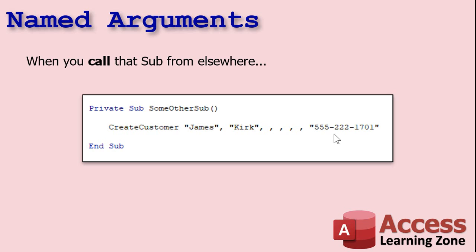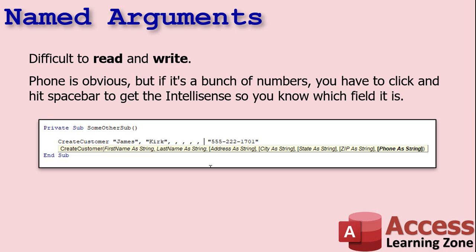When you call that sub from somewhere else, you say Create Customer and then your list of parameters. The way Bryce has it right now, if he only has first name, last name, and phone number, he's got to go comma, comma, comma, comma, comma. You've probably heard me joke about this in other videos — like DoCmd.OpenForm: form name, comma, comma, comma, comma, and then you put the where condition. Same kind of thing here, and you can use named arguments with the built-in Access functions too. Not only is this difficult to write, it's also difficult to read.